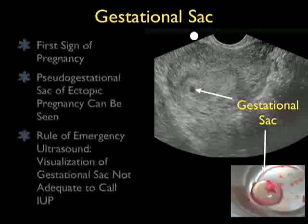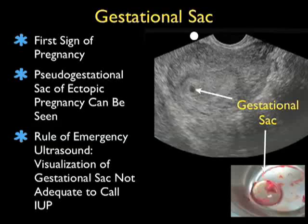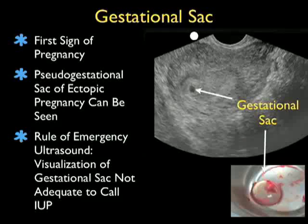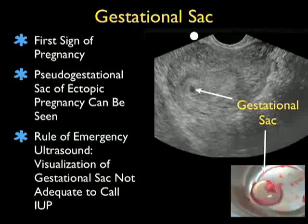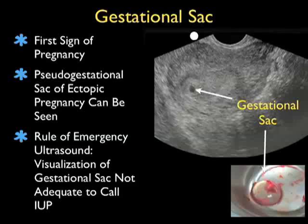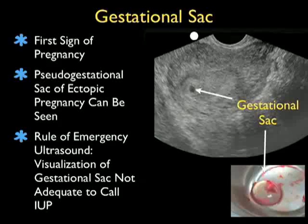The first finding during an intrauterine pregnancy is the gestational sac — a small, round, dark or hypoechoic circle relative to the rest of the uterus. We also see a gestational sac specimen with a translucent membrane-type appearance. Unfortunately, the gestational sac alone is not diagnostic of an intrauterine pregnancy, as a pseudo-gestational sac of ectopic pregnancy can be seen from hormonal stimulation. The general rule in emergency ultrasound is that visualization of a gestational sac alone is not adequate to call an intrauterine pregnancy.